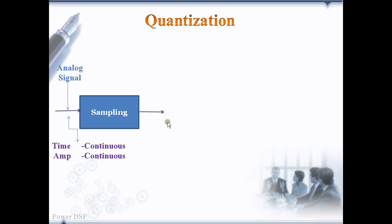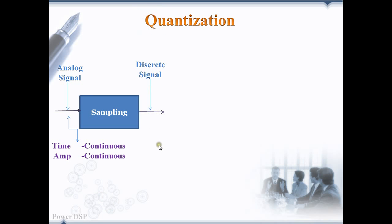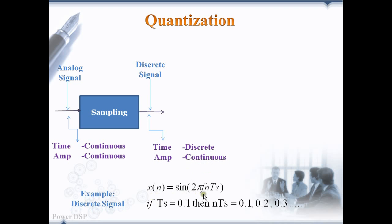Next, the signal that is coming out of the sampling process is in discrete form and is called discrete time signal. Time is discrete, amplitude is continuous—discrete in time and continuous in amplitude. For example, x(n) = sin(2πfnTs) is a discrete signal. Ts is the sampling period.